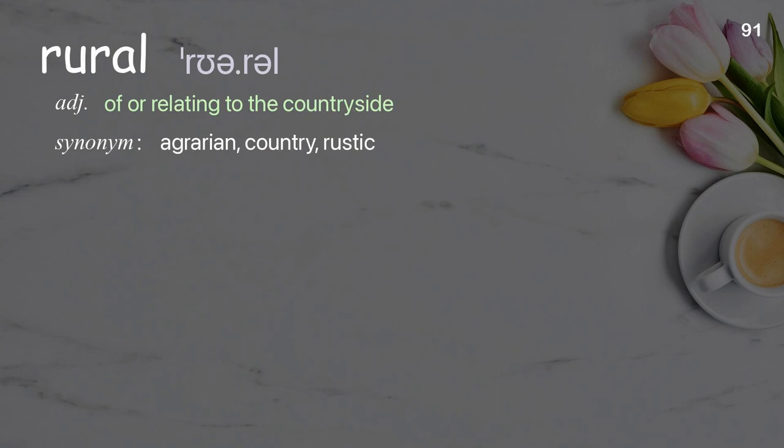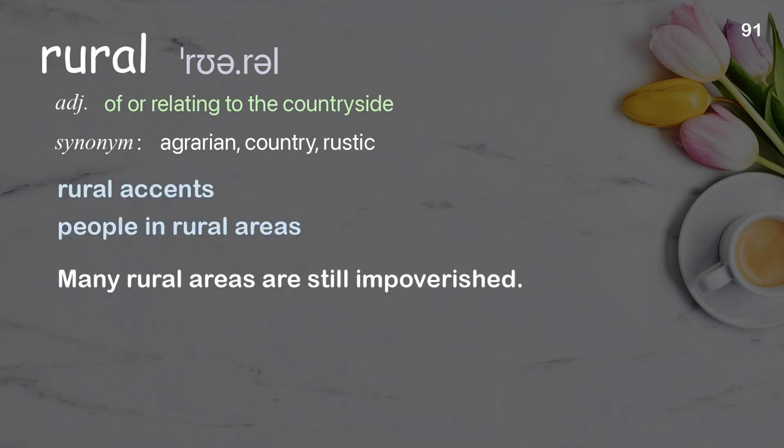Rural: Of or relating to the countryside. Examples: Rural accents, people in rural areas. Many rural areas are still impoverished.